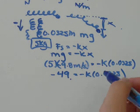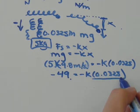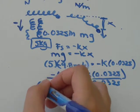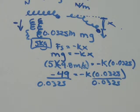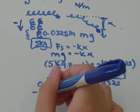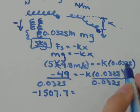To solve for k, all I'm going to do is divide by 0.0325 on both sides. Negative 49 divided by 0.0325, I get that equal to 1,507.7 equals,